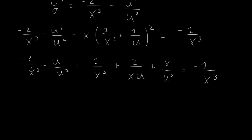That all equals minus 1 over x cubed. So minus 2 over x cubed plus 1 over x cubed equals minus 1 over x cubed, which matches the right-hand side. So this term plus this term exactly cancels this term, giving zero.